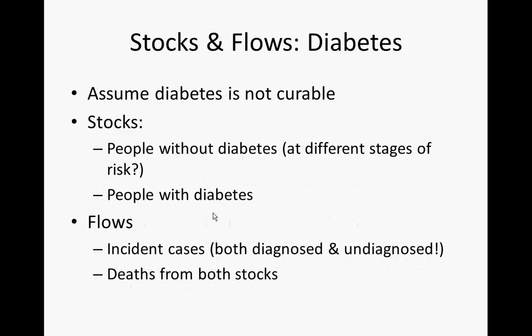We're going to build a little model. We'll start with a very simple model to develop stock and flow reasoning and see how the pieces come together, then move to a model with feedbacks that exhibits slightly more complex behavior. We're going to assume for the moment that diabetes is not curable and is dichotomous — you either have diabetes or you don't. So there are going to be two stocks: people with diabetes and people without diabetes. We can elaborate this with different stages of risk or pre-diabetes, but here we'll just have two stocks with flows between them.